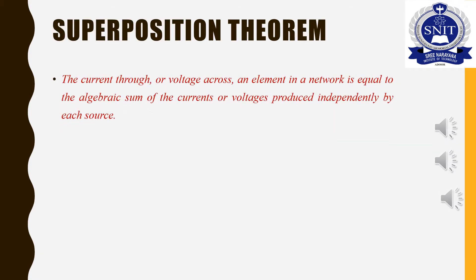Superposition theorem states that the current through or voltage across an element in a network is equal to the algebraic sum of the currents or voltages produced independently by each source.